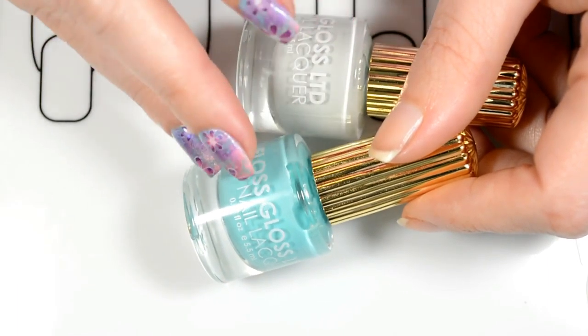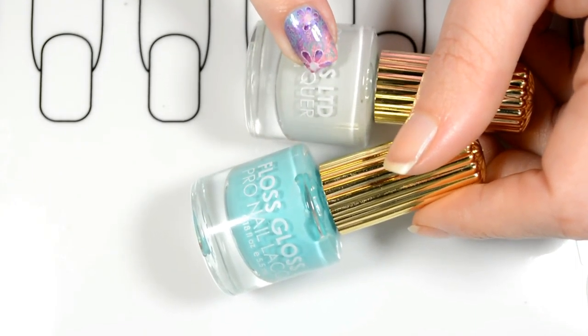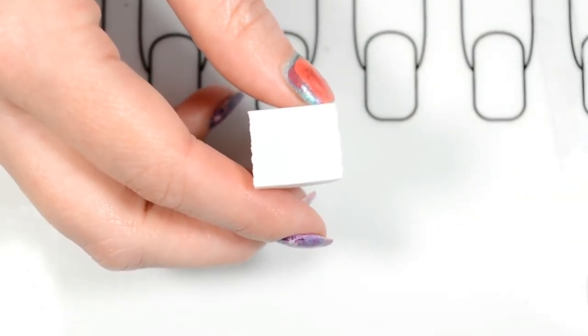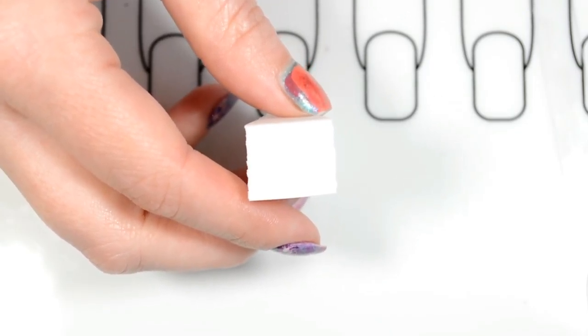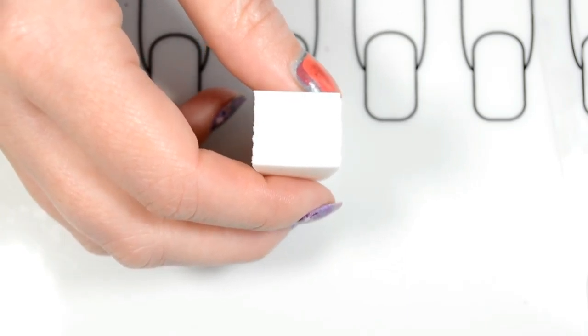For the ombre that I will be showing you, we are going to be using green and we're just going to be using two different shades to keep it nice and easy. As I mentioned, the technique for both an ombre and a gradient are the same exact thing. I will show you both, but I will be speeding through the second one.